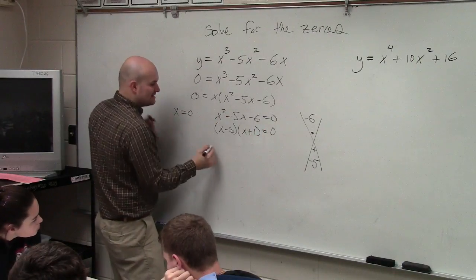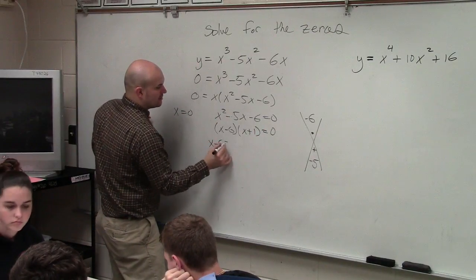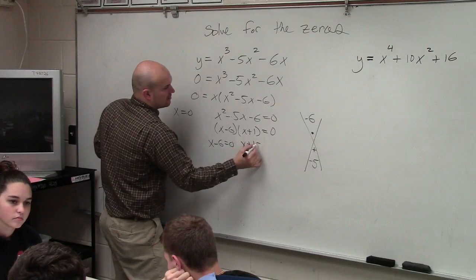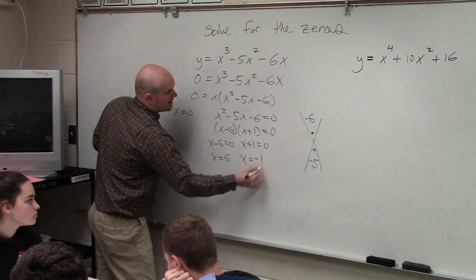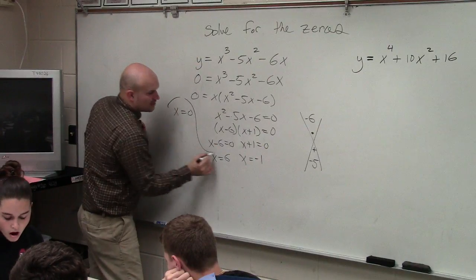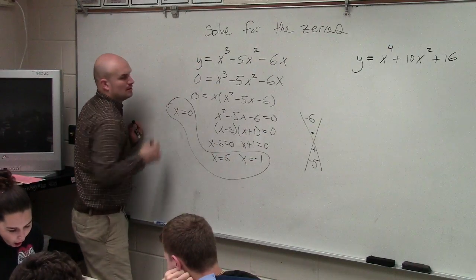Now I set these equal to 0 again, and therefore, I have x equals 6 and x equals negative 1. So my zeros are all right there.